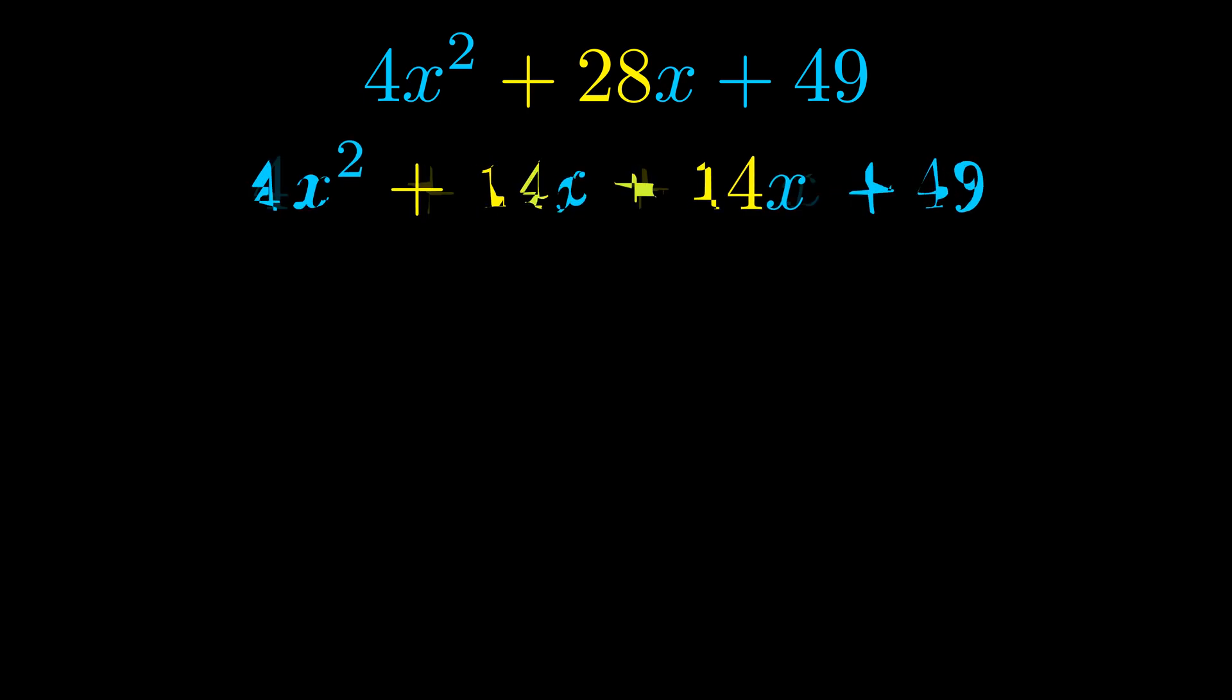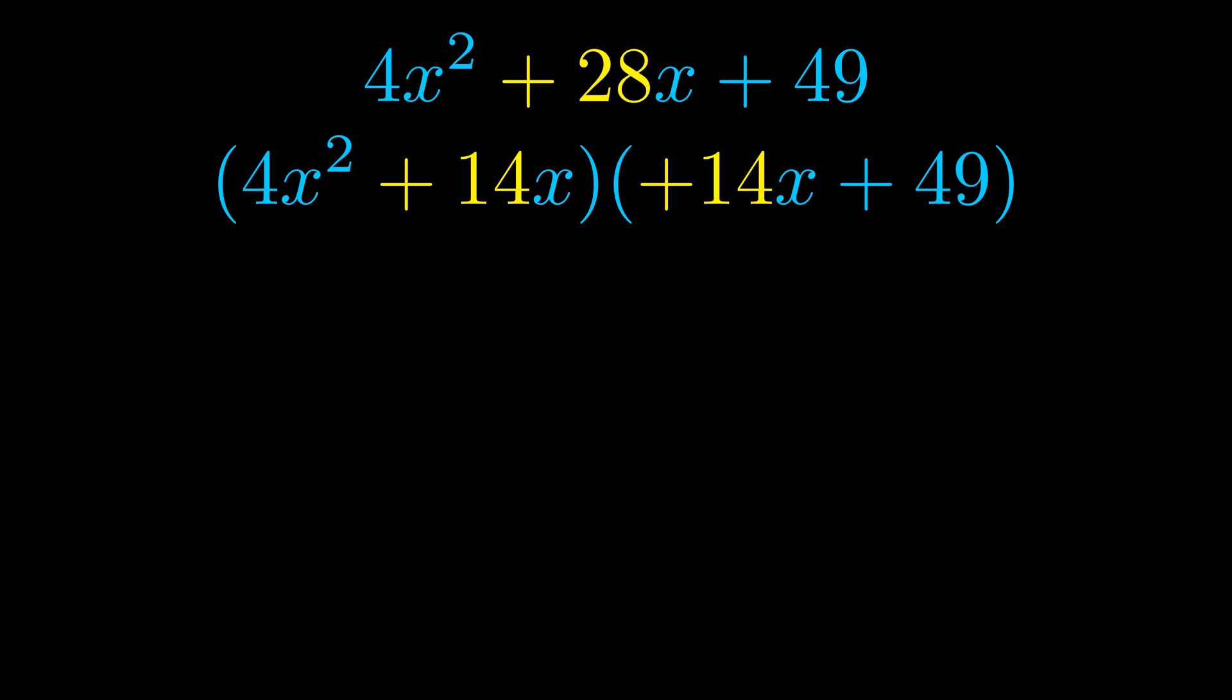Once we've done this, we go ahead and put parentheses around the first term and the last term. And we do that so that we can take the greatest common factor out of both terms. We can see the greatest common factor is now outside in green.